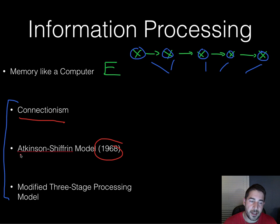In 1968, two guys, Atkinson and Schifrin, so it's called the Atkinson-Schifrin model, sometimes called the three-stage model of information processing. It's also called the three-stage model. It's not the one that's currently used. We use the modified one, but it was the first, so we give a little credit to it. In the first, you encode, you get some sort of sensory information.